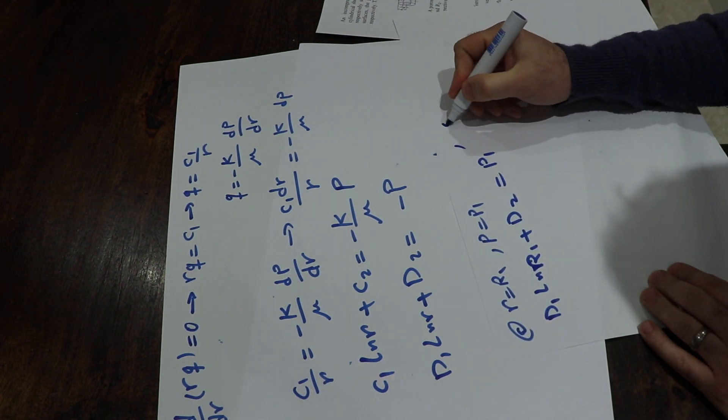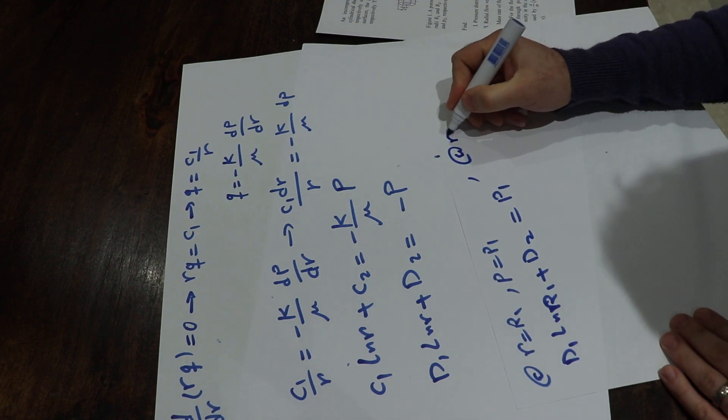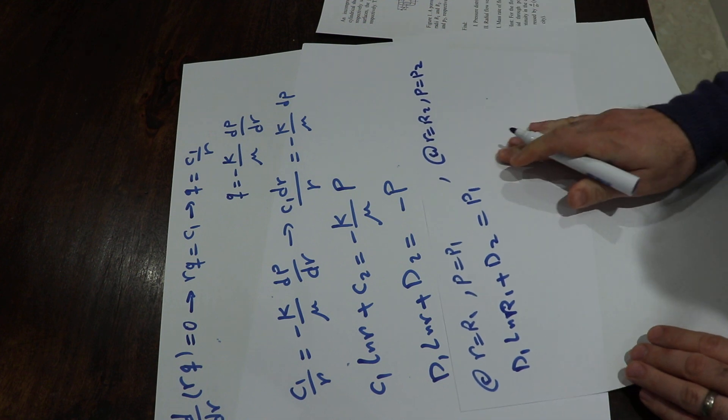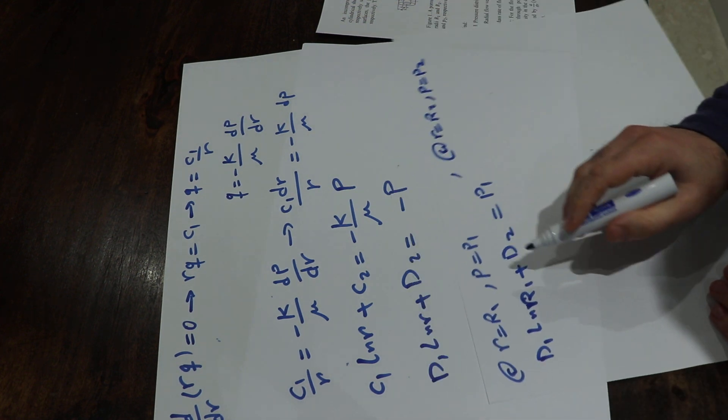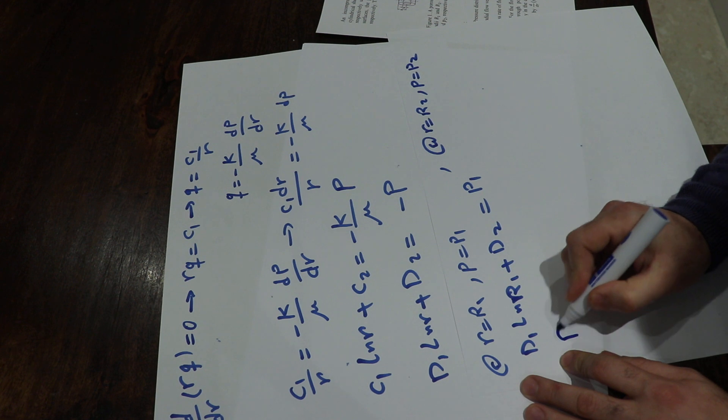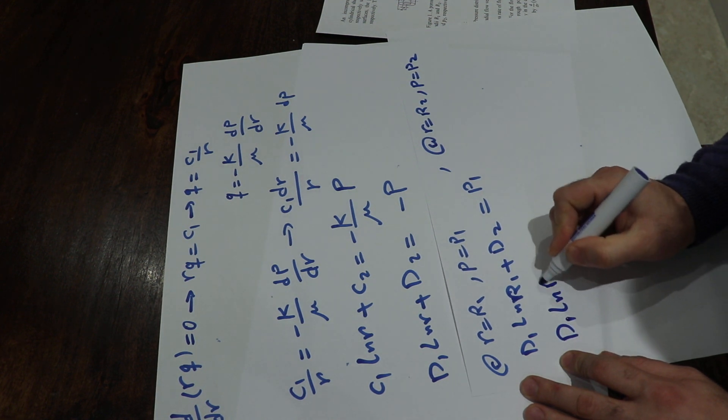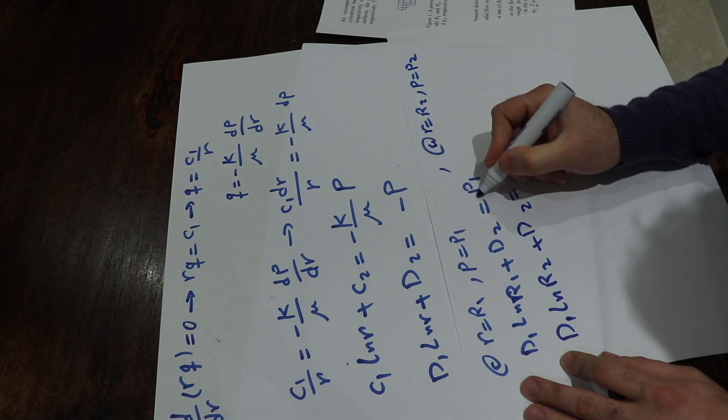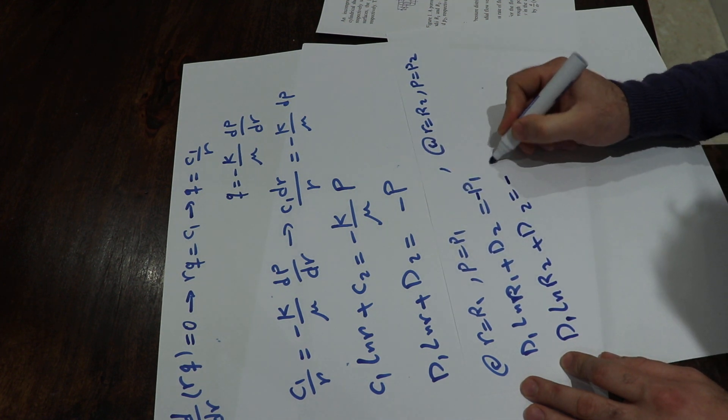The second boundary condition is that at R equal to R2, we know P is equal to P2. Therefore, if in this equation I put R equal to R2, I will get D1 ln R2 plus D2 will be equal to—there was a minus sign, sorry—will be equal to minus P2.